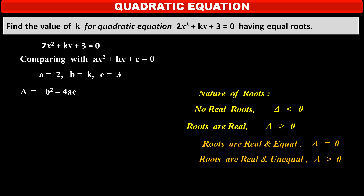Therefore, by using these rules we have to find the value of k. First, we have to find the value of the discriminant. Substituting the values of a, b, and c in the formula of the discriminant, we get b² — that is k² — minus 4 into the value of a, which is 2, into the value of c, which is 3.